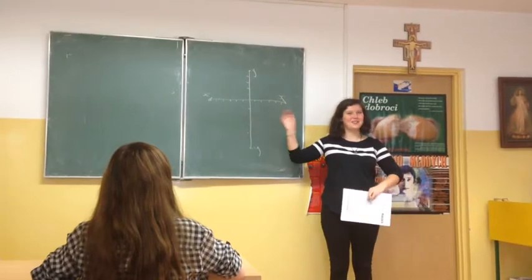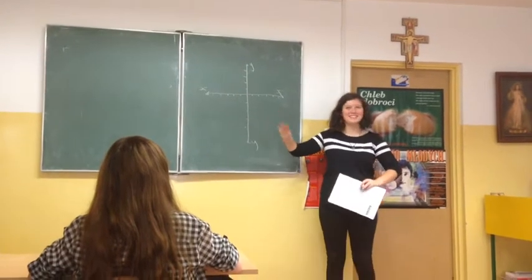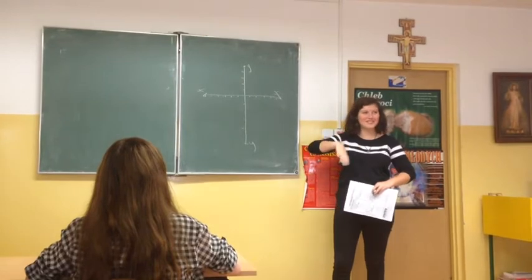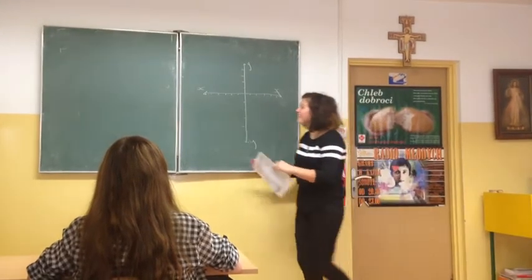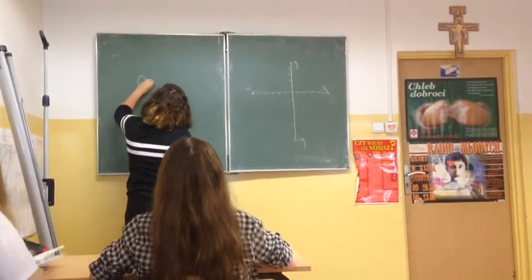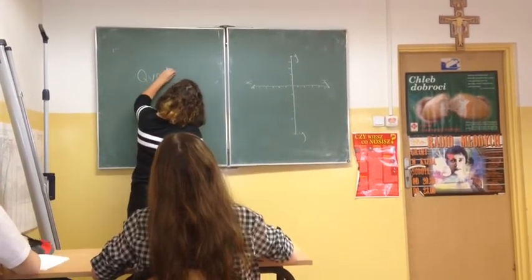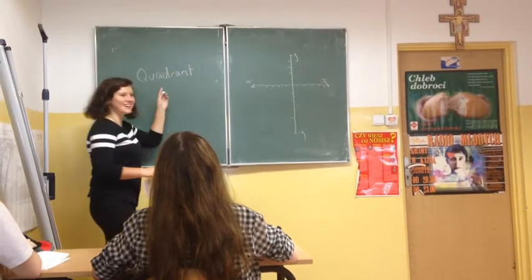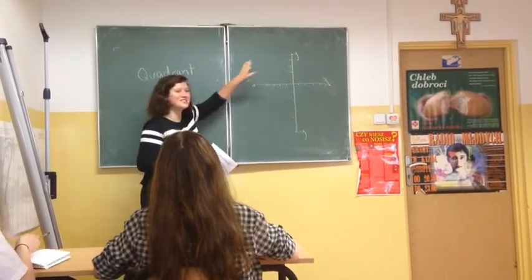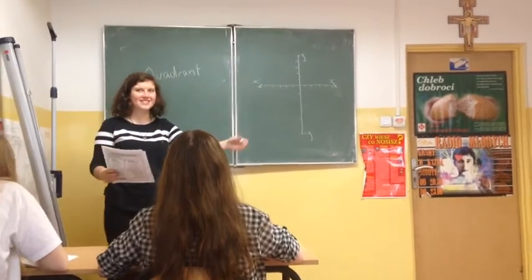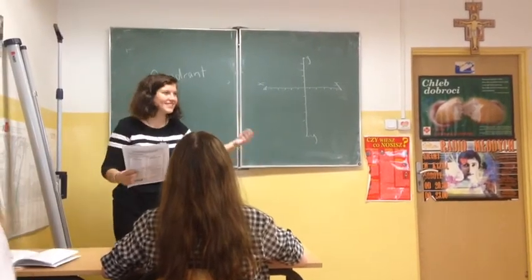We have positive and negative coordinates, so the graph has four regions. They're called quadrants. Each of these are called quadrants. Can you please repeat? Quadrant. Quadrant. Quadrant.